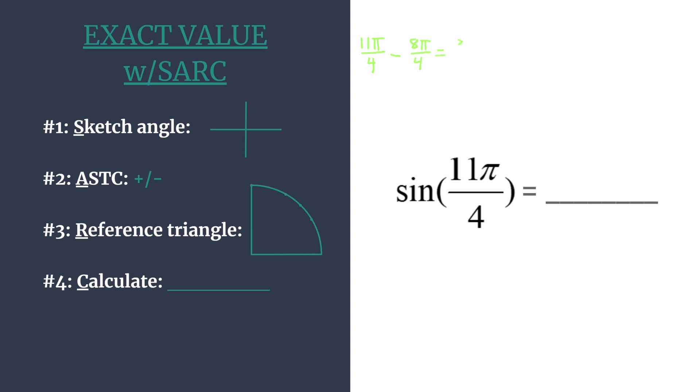So when sketching our terminal side, we can actually sketch the terminal side of the angle 3π over 4, and it'll be the same angle as 11π over 4, just without that additional rotation. So here's zero. We know that it's a positive angle, so we're rotating counterclockwise. We have π over 2 here and π here, or that's the same thing as 4π over 4. So we see that the terminal side for 3π over 4 or for 11π over 4 falls right here halfway in the second quadrant.